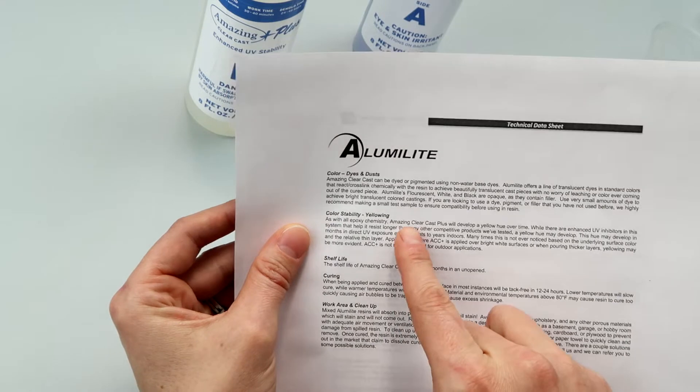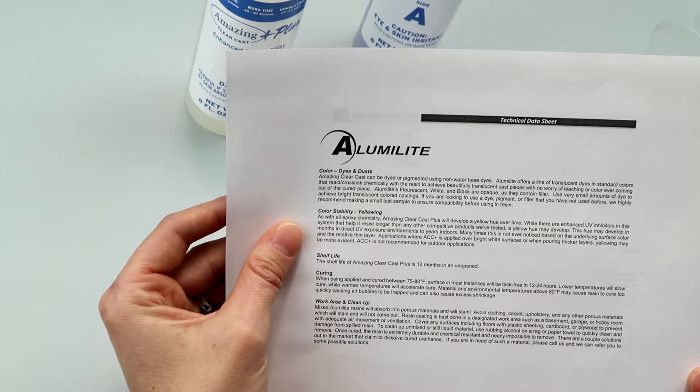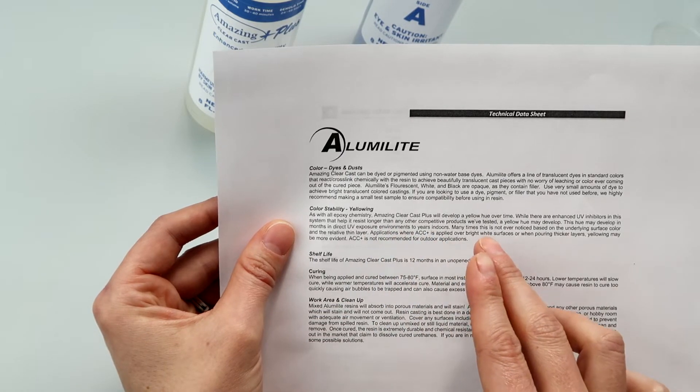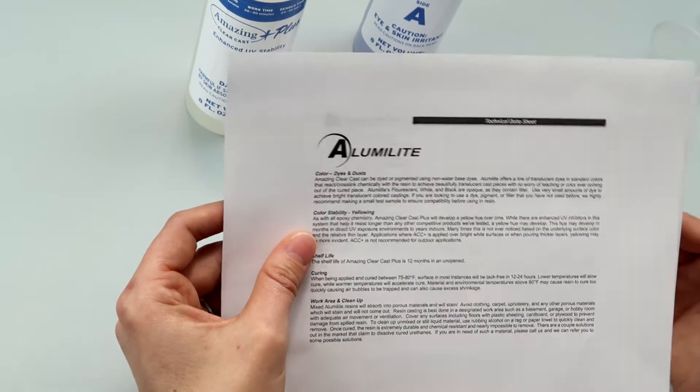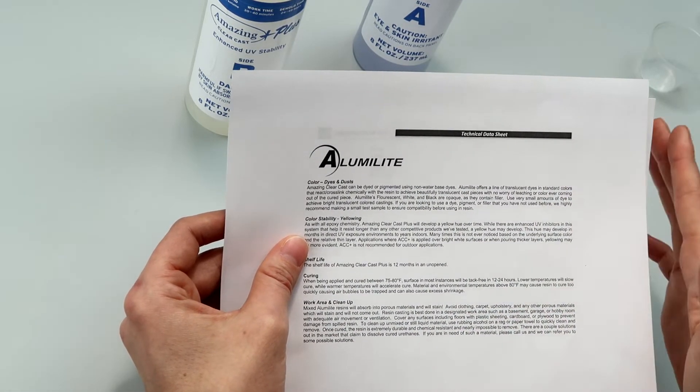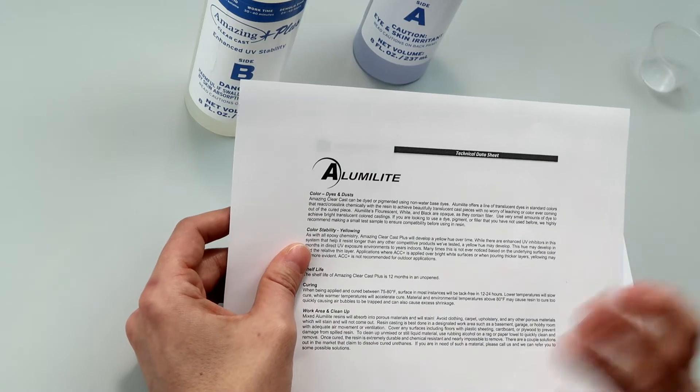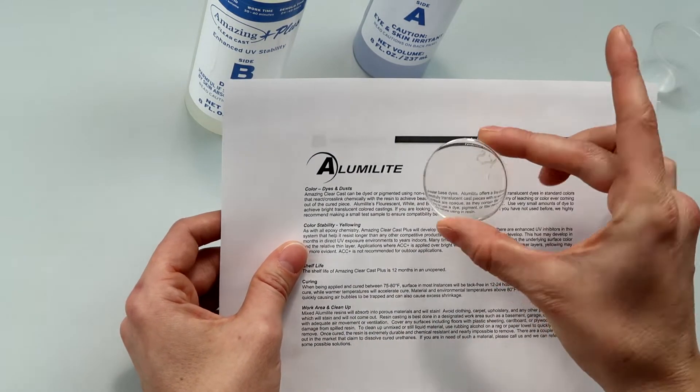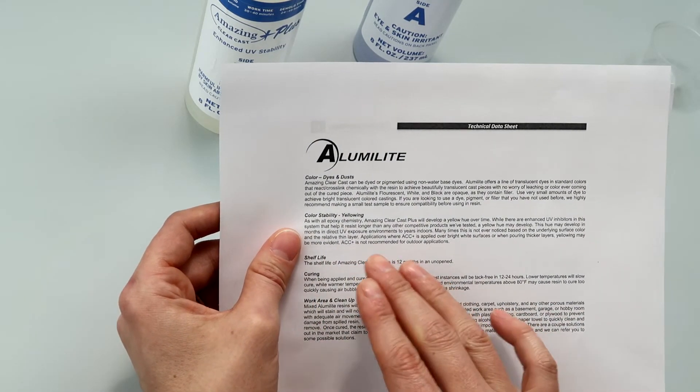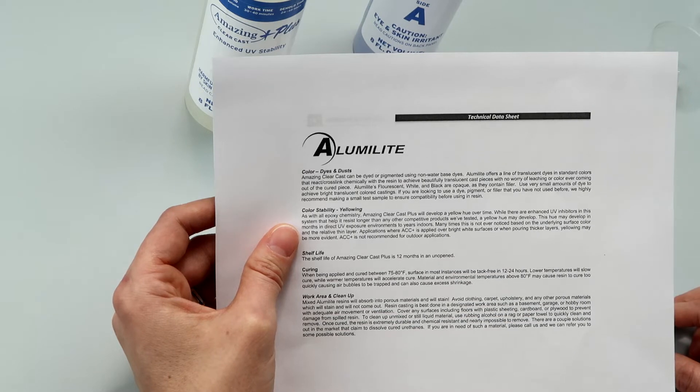Okay, color stability yellowing. I thought that this was interesting. As with all epoxy chemistry, ACC Plus will develop a yellow hue over time. While there are enhanced UV inhibitors in the system that will help it resist longer than any other competitive products we've tested. It's a pretty bold statement. They're saying that it yellowed less than any of the other things they tested. I'm personally curious about what they have tested. The last time a product said that it had some of the best UV inhibitors on the market, it was this Chaos resin and I'm still like wow. So I don't know. I look forward to finding out. The hue may develop in months in direct UV exposure environments to years indoors. Yeah, it's gonna yellow but it's gonna yellow less than other products is what it's saying.